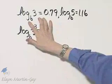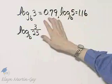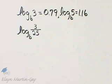Make sure you understand that we're given log base B of 3 and log base B of 5. We want to use this information to find log base B of 3 over 25.